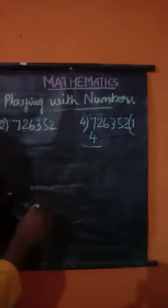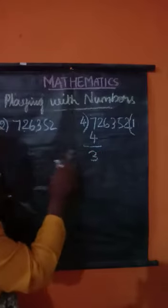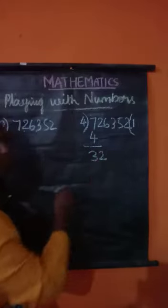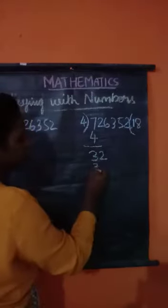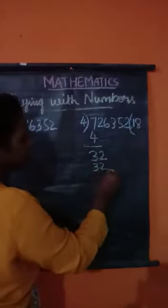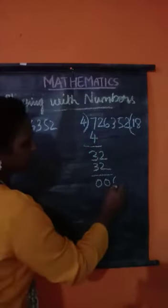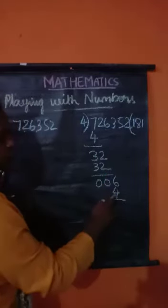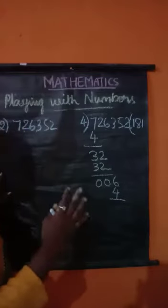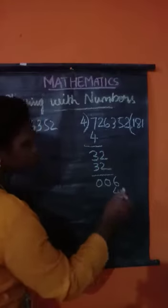If I subtract from 7, 4, I will get 3. 3 is smaller than 4, so I am going to take 2. 4 eights are 32. If I cancel 2, 0, then 3 minus 3 I will get 0. Next number is 6. Again 4 ones are 4. In 6, if I minus 4, I will get 2. Next number is 3.